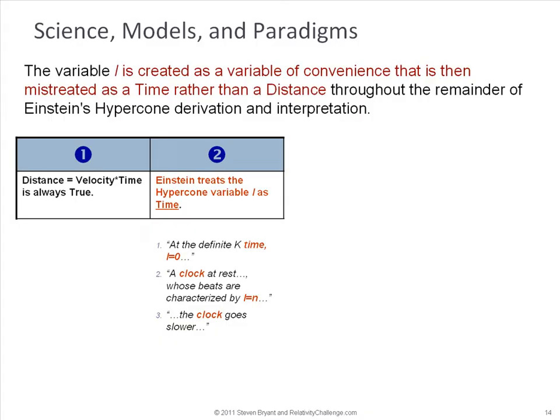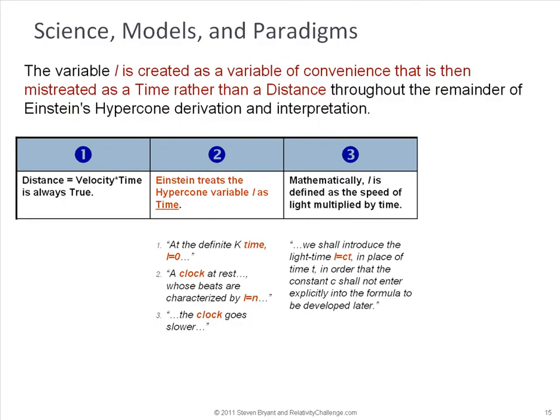When we read his book, we find that he treats L in his hypercone derivation as a time variable. And we know that from the statements that he makes, where he refers to it as time, or he characterizes it with clocks or with beats. So these are all things that Einstein says as he's describing L. Now, the way he creates L is with a simple brushstroke that is really intended as a substitution for convenience. He really doesn't want CT floating around in his derivation. So he says, I'm just going to replace that with L and continues with his work.